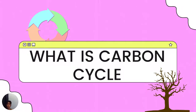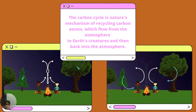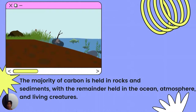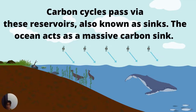So, what is the carbon cycle? The carbon cycle is nature's mechanism of recycling carbon atoms, which flow from the atmosphere to Earth's creatures and then back into the atmosphere. The majority of carbon is held in rocks and sediments, with the remainder held in the ocean, atmosphere, and living creatures. Carbon cycles pass via these reservoirs, also known as sinks.